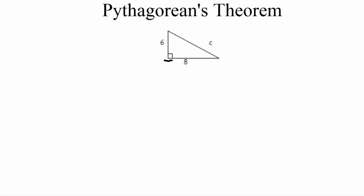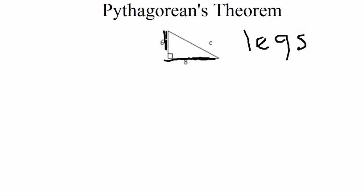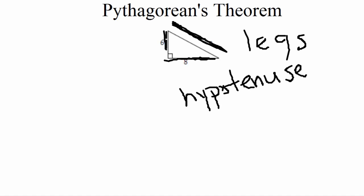As long as we have a right triangle, we can find one of the missing sides. We can either be solving for the sides of the triangle, which are actually known as the legs, or we could be solving for the diagonal side, which is called the hypotenuse. We need to have two out of the three sides known, and as long as we have that, we can use the Pythagorean theorem to find the other side.